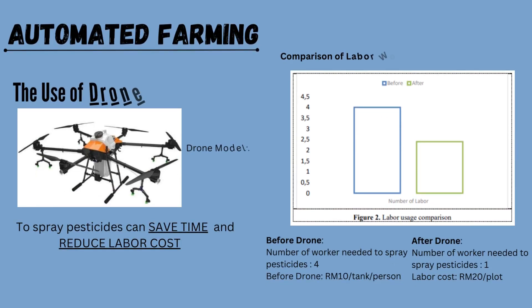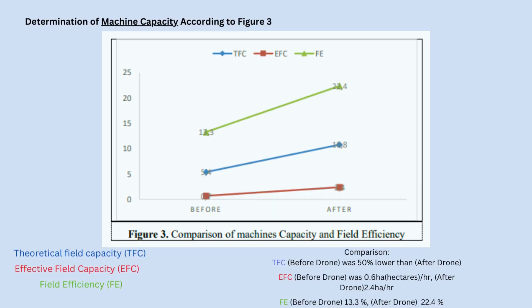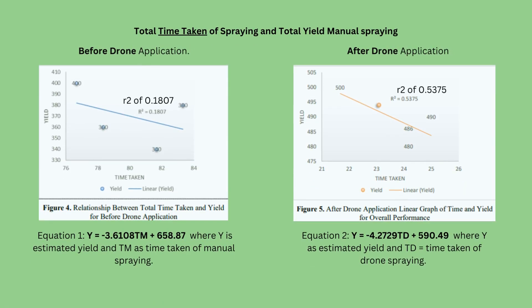Automated farming with the use of drones involves the use of chemistry, saves time, and reduces labor costs. The graph shows the comparison of labor costs before and after drones. This is also a graph of machine capacity before and after drones, showing TFC (theoretical field capacity), EFC (effective field capacity), and FE (field efficiency), all of which have highly increased. The before and after results of drone application show improvements in time taken to spray and total yield versus manual spray. We have successfully proved these two equations, and this is how mathematics is implemented into it.